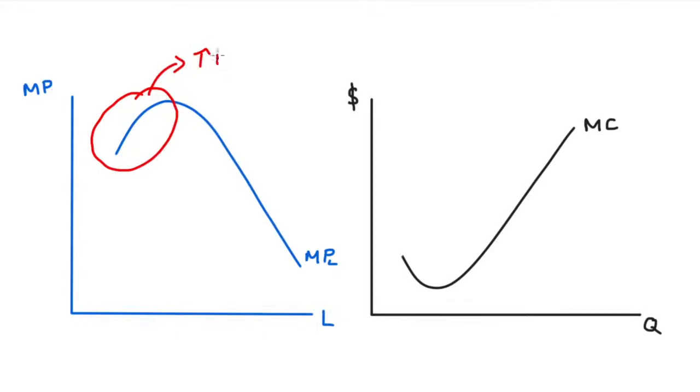Initially, as we add labor, we enable our labor units to move towards those tasks in which they have a specialization or comparative advantage. So we have an increasing marginal product of labor. This corresponds perfectly to our decreasing marginal cost as our labor units are becoming more effective, leading to us being able to produce each additional unit more cheaply.